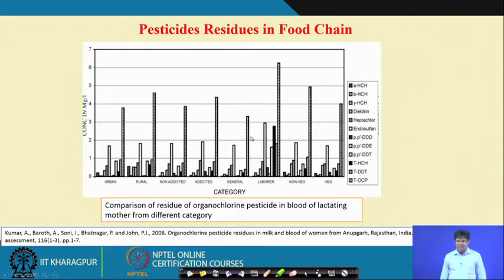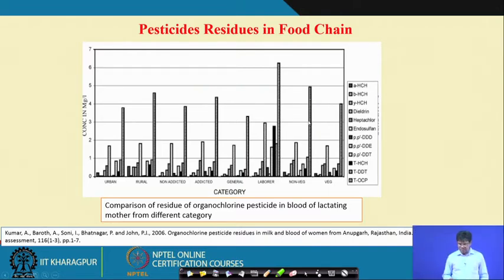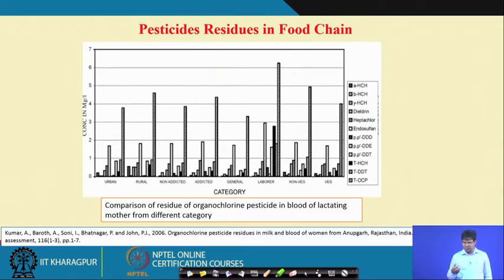Labour category workers had extremely higher pesticide residue in their blood compared to the general category, as they are exposed to farm fields, pesticide application, and spray in the air. Non-vegetarians have higher pesticide residue content compared to vegetarians. As food chains transfer pesticide residue from one stage to another — through poultry or cattle consumption — non-vegetarians accumulate more pesticide residue compared to vegetarians.